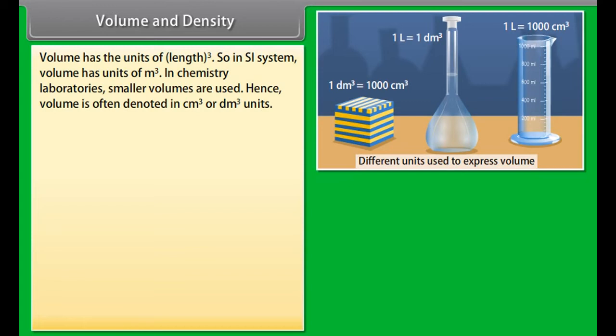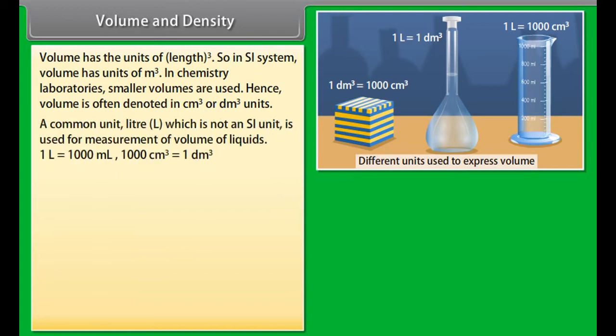The measurement or observation of chemical properties require a chemical change to occur. Examples: Characteristic reactions of different substances. These include acidity or basicity, combustibility, etc.